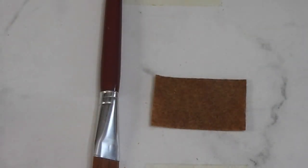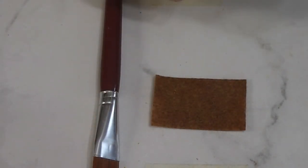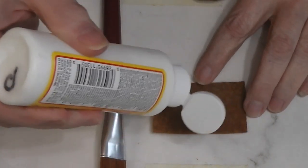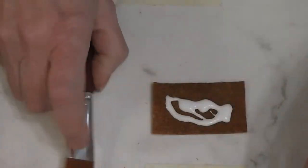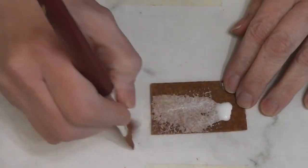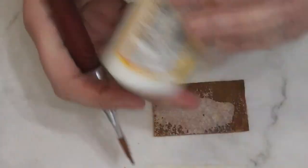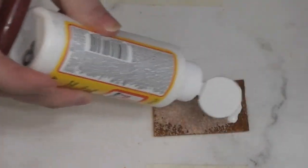And I have some matte Mod Podge and what I'm going to do for our first step is I am going to coat this piece of felt with a nice, thick, generous coat of Mod Podge. I want the whole thing, you want it all saturated. This is going to do a couple of things.